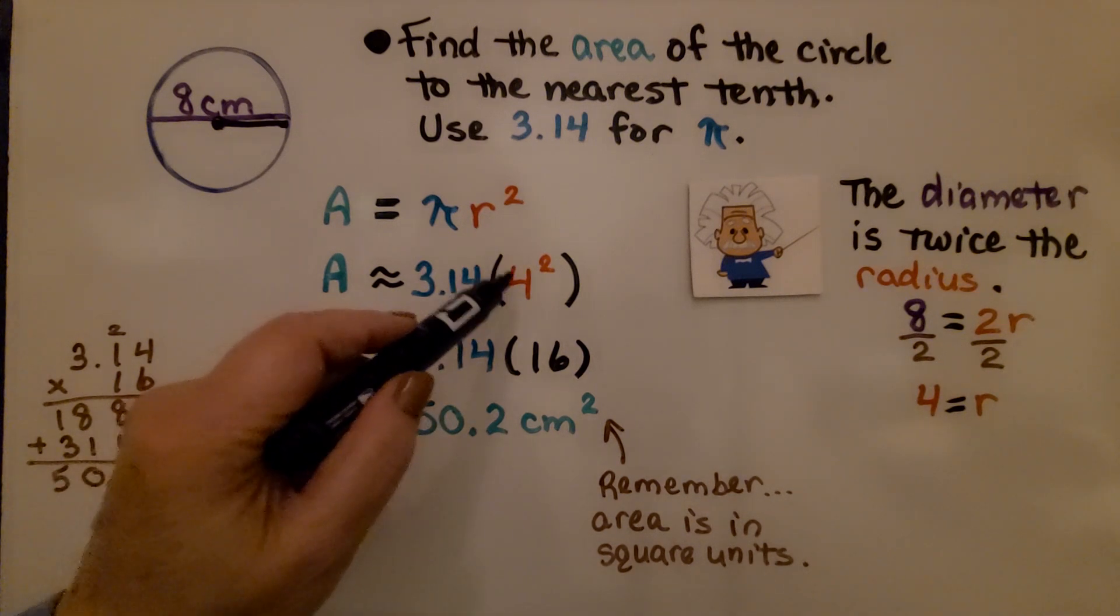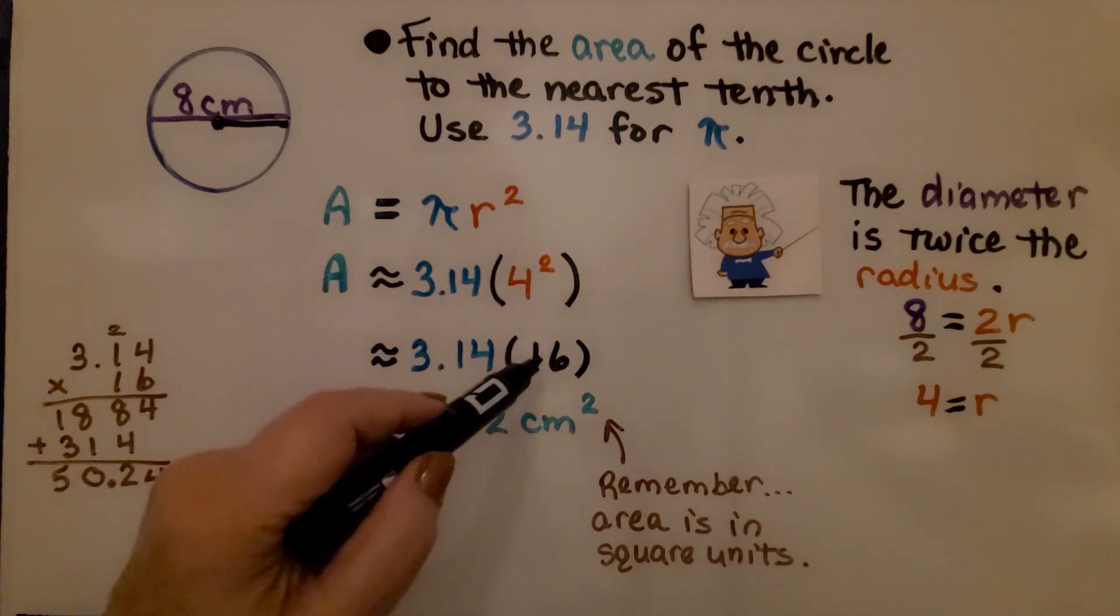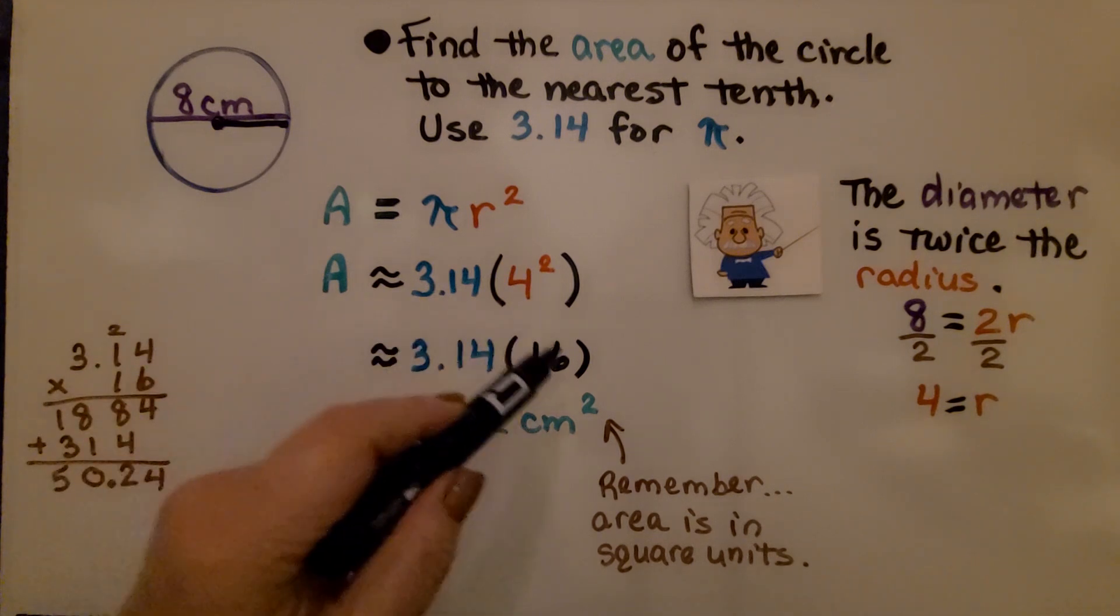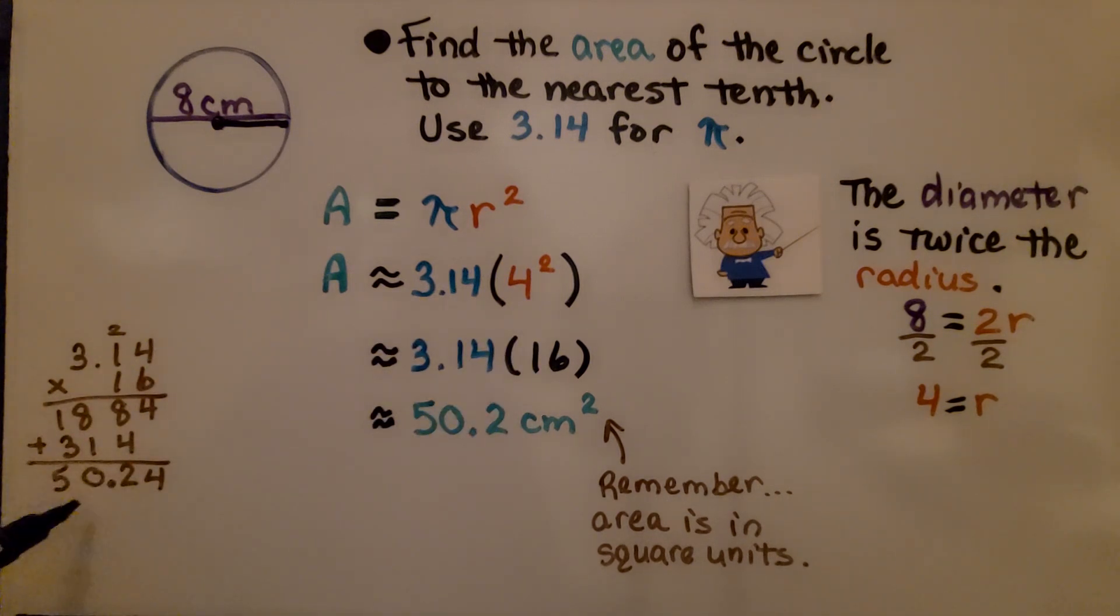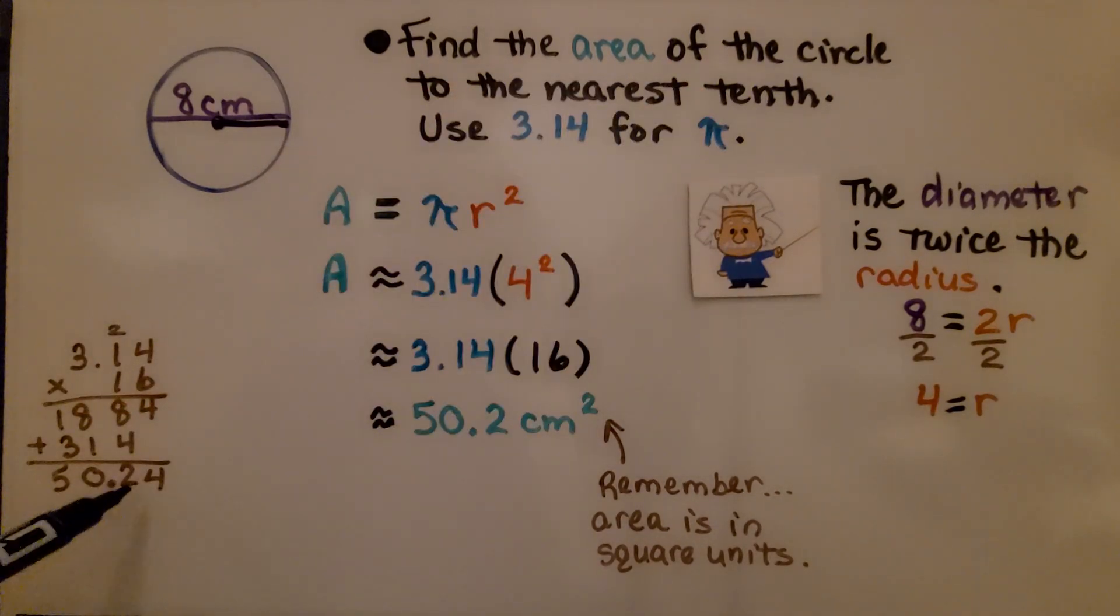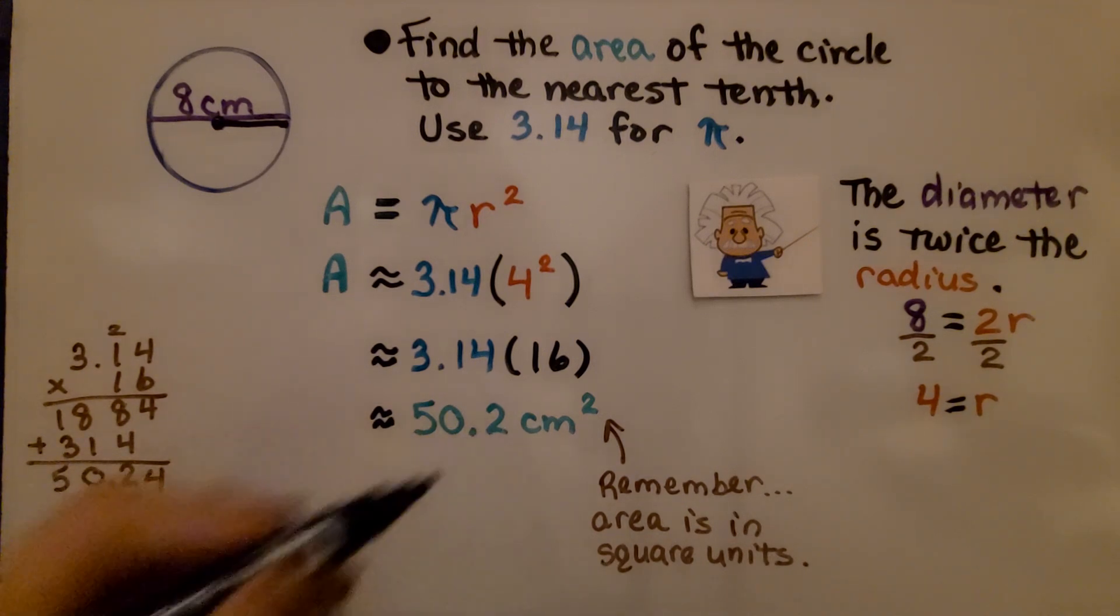We multiply four times four, which is 16. We multiply 3.14 times 16 and we get 50 and 24 hundredths. But it says to the nearest tenth. So we have a two here in the tenths place. And the four isn't great enough to make this round up to a three. So we're just going to round and have 50 and two tenths.